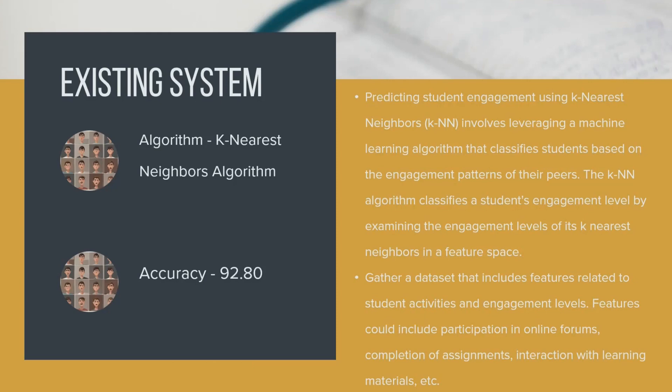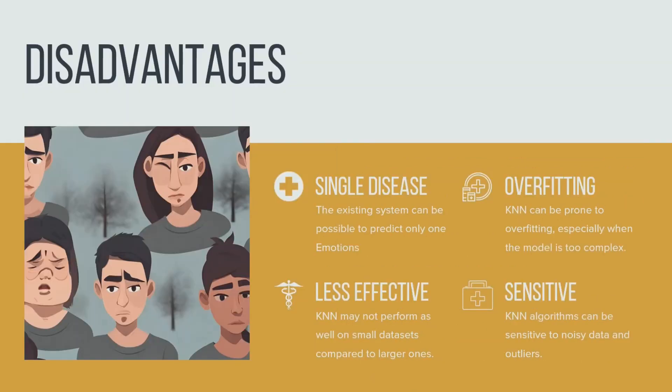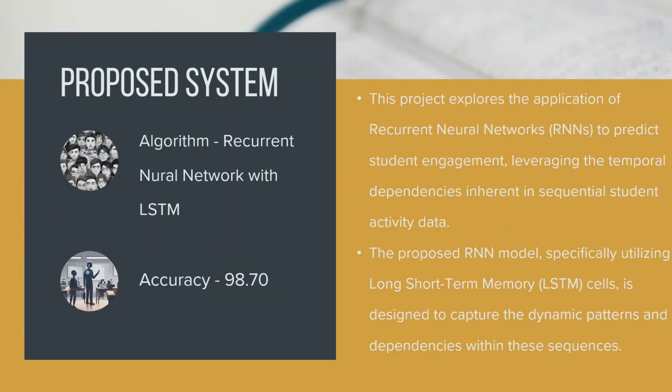In the existing system, using KNN, the main drawbacks are: accuracy is very low at 92%, it can detect only one emotion at a time, it leads to overfitting, and it is less effective and sensitive when fed noisy or low-light images. In our proposed system, we use a Recurrent Neural Network which achieves 98% to nearly 99% accuracy. With RNN we are also going to find accuracy, precision, and recall metrics.